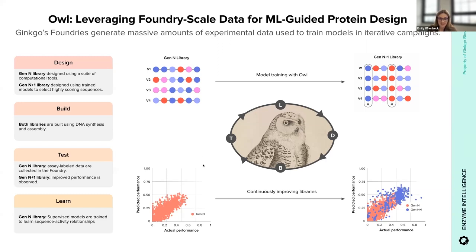We call that a Gen N+1 library, and build and test them as before. And when this is working, what you see is that the predictive performance from the model correlates with the actual performance observed experimentally.